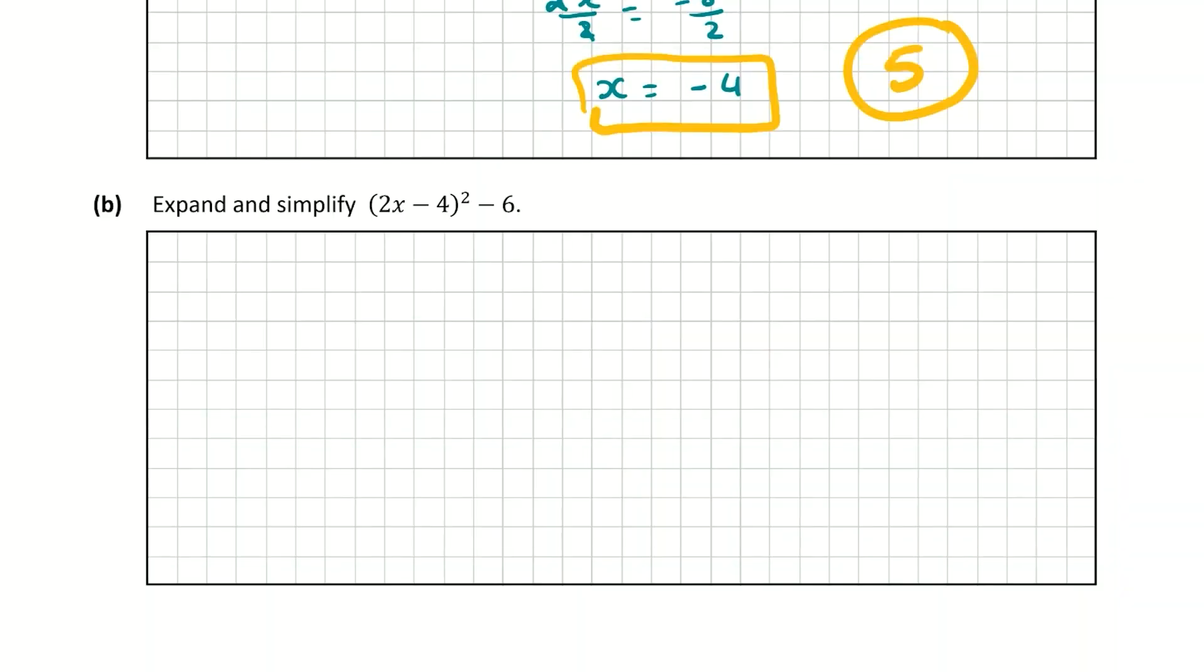Question B asks us to expand and simplify (2x - 4)² minus 6. So I'm just going to write this out here for myself. The first thing I'm going to do is I'm going to multiply out my back to back brackets. So I'm going to rewrite (2x - 4)² as (2x - 4) by (2x - 4). And we'll just leave minus 6 as it is.